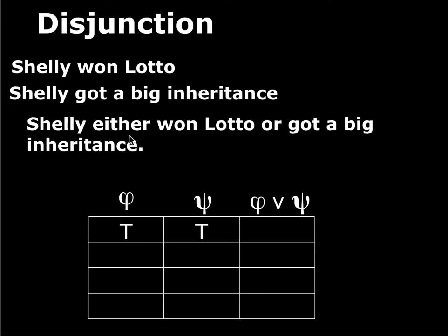Now we flag Shelly down, she pulls over, we talk with her. Suppose both of these disjuncts are true. She says, this is really my lucky week — I won lotto and I got a really big inheritance. So both are true: she did win lotto, she did get a big inheritance. Was my guess right when I guessed that disjunction? Yeah, my guess was right — in fact, it was kind of doubly right. You wouldn't look at me and say you were wrong. When both of these disjuncts were true, the disjunction is true.